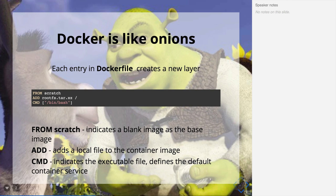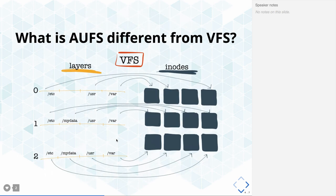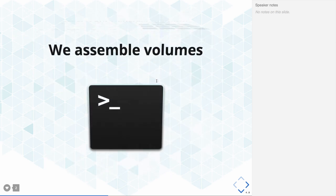In a Dockerfile, FROM indicates a blank or base image. ADD adds a local file to your container image, and CMD is the execution command you are going to run. There are actually layers created whenever you run an installation — first you get the base image of Node.js, then you copy the files, then run npm install. Each step creates a single layer onto your Docker image, and these are inodes getting created on top of every image.